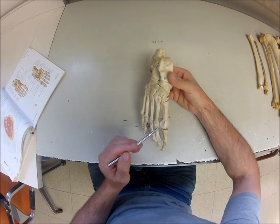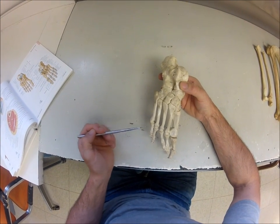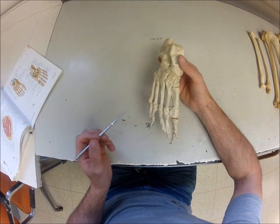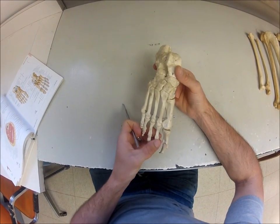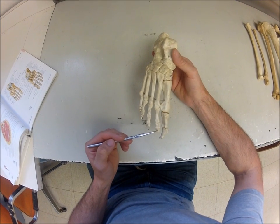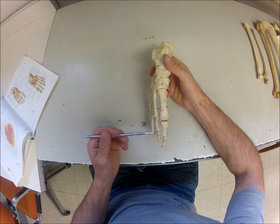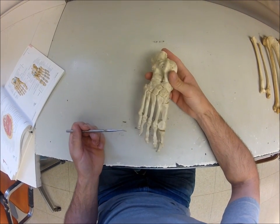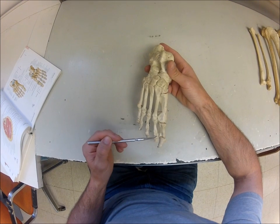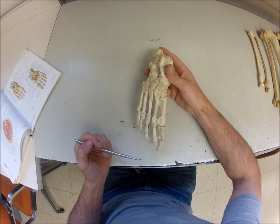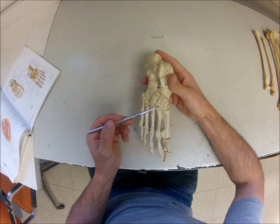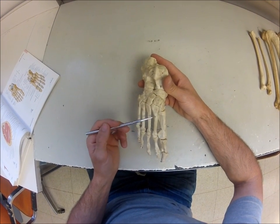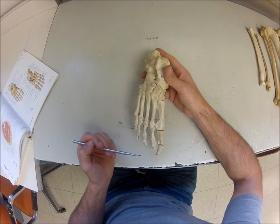There are five metatarsals — the first going to the big toe and the fifth going to the little toe. Off the end of the metatarsals are the phalanges. For the four smaller toes there's a proximal, middle, and distal phalange. For the big toe — the hallux — there's just a proximal and a distal phalange. For both metatarsals and phalanges, the proximal end is the base, the middle is the shaft, and the distal end is the head.